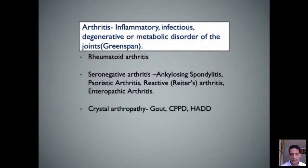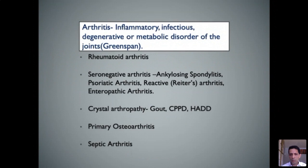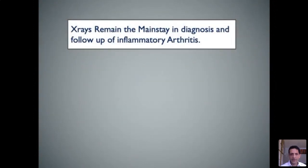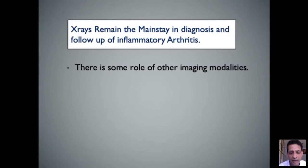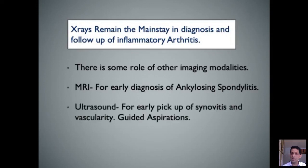We will focus on rheumatoid arthritis, seronegative arthropathies including ankylosing spondylitis, psoriatic arthropathy, and reactive arthritis — formerly called writer's arthropathy — and enteropathic arthritis, as well as crystal arthropathy. We will also briefly touch on septic arthritis and osteoarthritis to understand the differences. One important point: X-rays remain the mainstay in diagnosis and follow-up of inflammatory arthropathies, with MRI regularly requested as the first imaging investigation for ankylosing spondylitis, and ultrasound useful for early synovitis detection and guided aspirations.